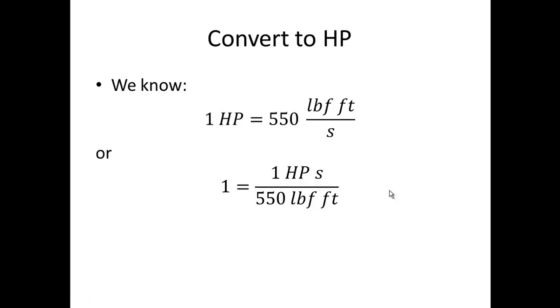So let's think about converting to horsepower. We know that one horsepower equals 550 pound force feet per second. Divide both sides by 550 pound force feet per second. We would get 1 equals 1 horsepower second divided by 550 pound force feet.